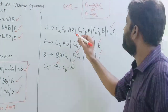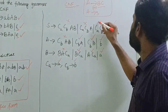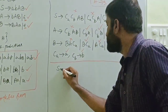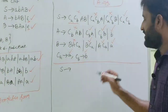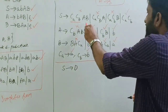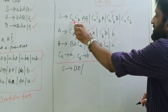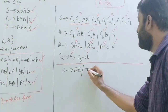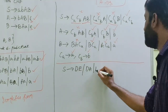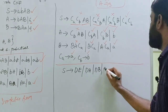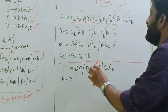The productions not yet converted into CNF — those with more than two symbols — need further processing. For S tends to CA CB A B, introduce a new non-terminal D for CA CB, and a new non-terminal E for A B. So S tends to D E, slash D A, slash D B, slash CA CB.